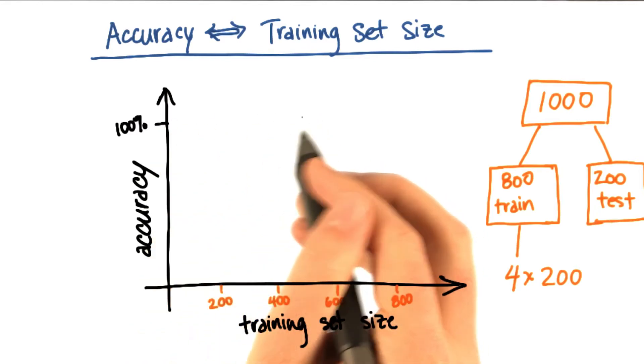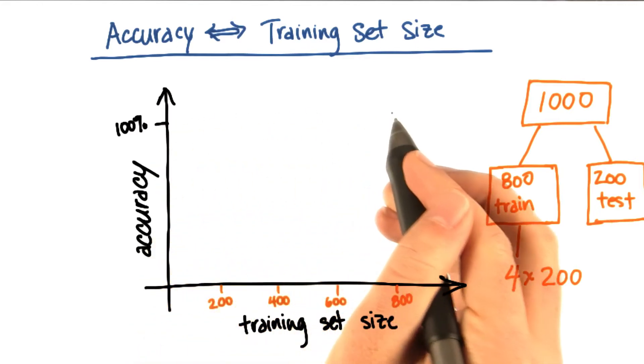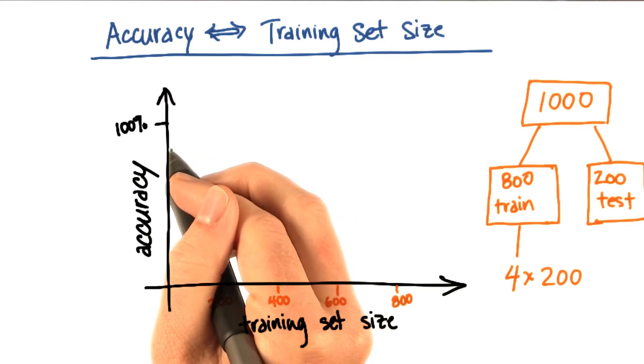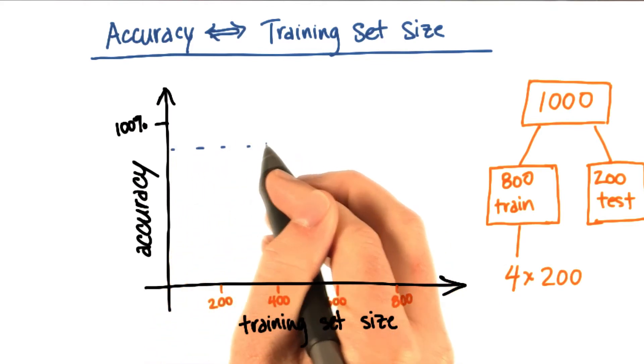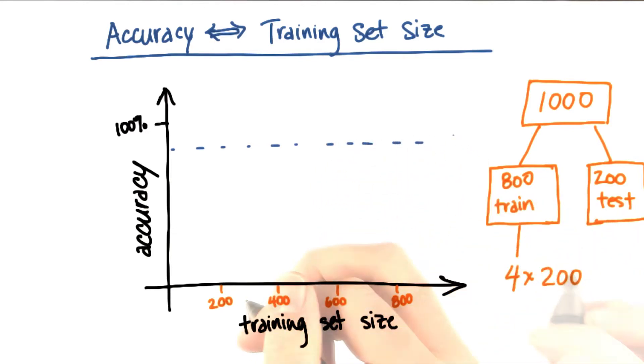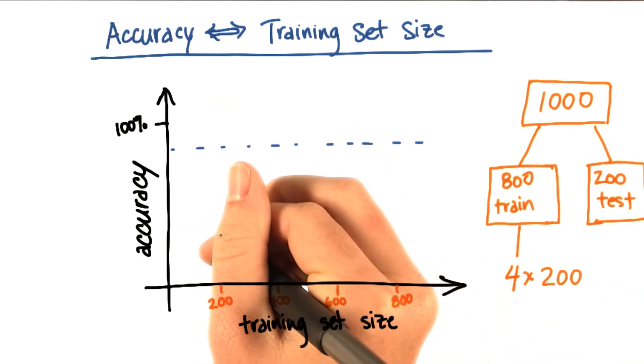And what I found was something that looked like this. The maximum accuracy that you can ever get will be 100%, and usually in practice, the maximum accuracy that's even hypothetically possible will be some number less than 100%. And if you don't have enough statistics in your training set, if your training set isn't big enough, you'll get an accuracy that's even lower than that.